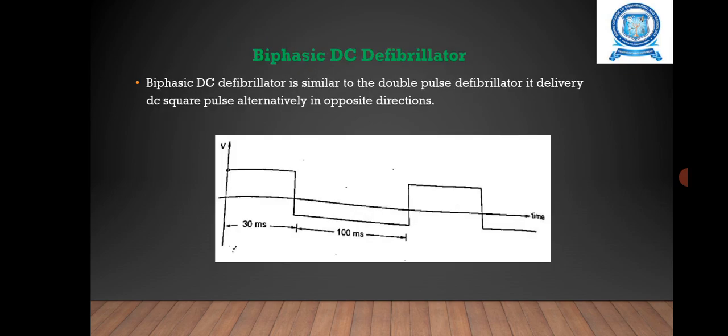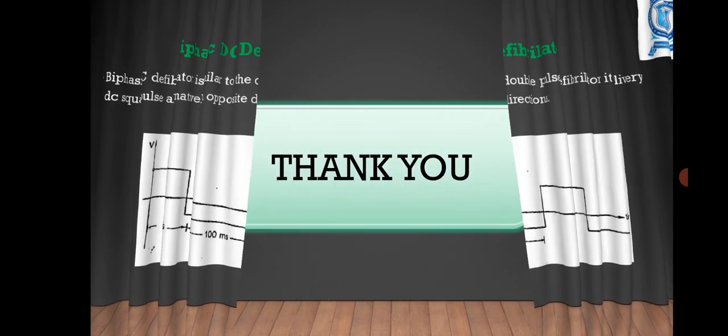The biphasic DC defibrillator is similar to the double pulse defibrillator. It delivers DC square pulses alternately in opposite directions, making it more efficient for defibrillation of the ventricular muscles.